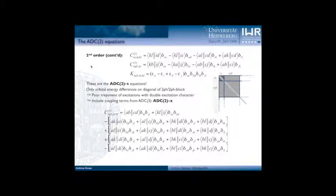This is a strict scheme, and it's rather straightforward to extend it by deciding to expand also the matrix elements of the two-particle-two-hole block to first order. This leads to the full matrix where this block is no longer diagonal, and additional terms have to be included. These terms included in the ADC2X scheme originally stem from ADC3.